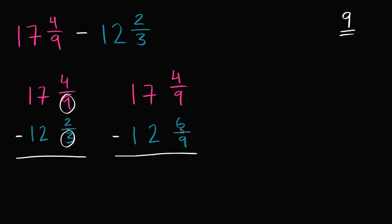So what can I do? Well, the answer is I can regroup. I can take a whole from the 17. Let me do that. So if I take a whole from the 17, that's going to become 16. And then that whole that I just took from the whole number place, I can add it to the fraction. Well, a whole is just going to be 9/9.